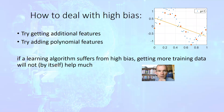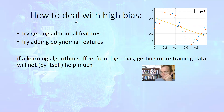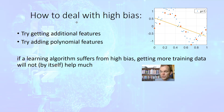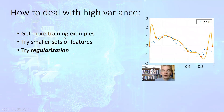How do we tackle the problem of high bias? We can try to add additional features — for example, if we use linear regression, we can try using polynomial regression, or if we use just one feature, we can use more features. Getting more training examples usually also helps. We can also try using a smaller set of features or reducing the order of our polynomial. And we can try regularization, the so-called regularization technique.